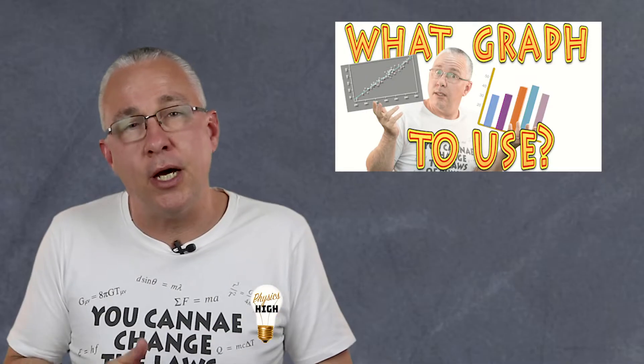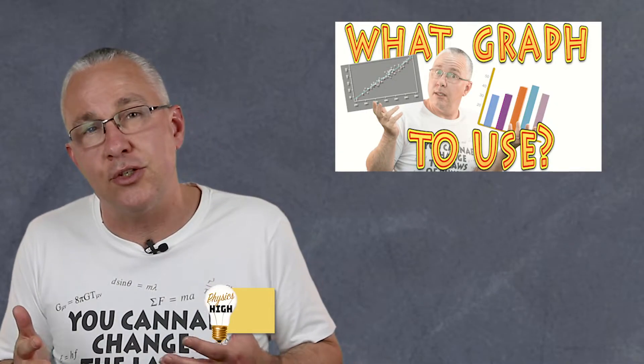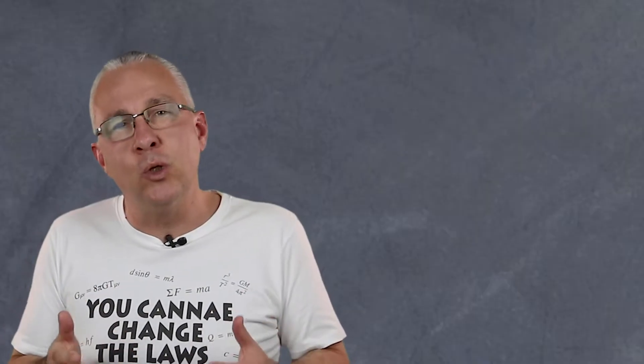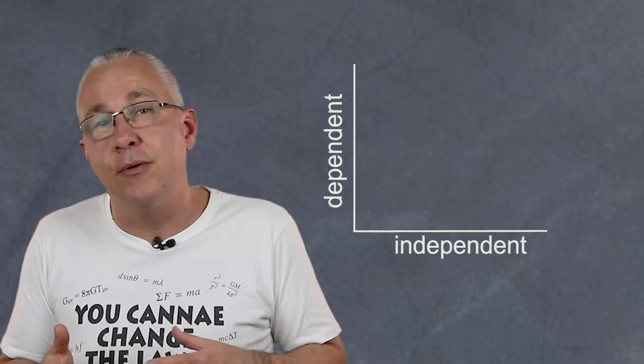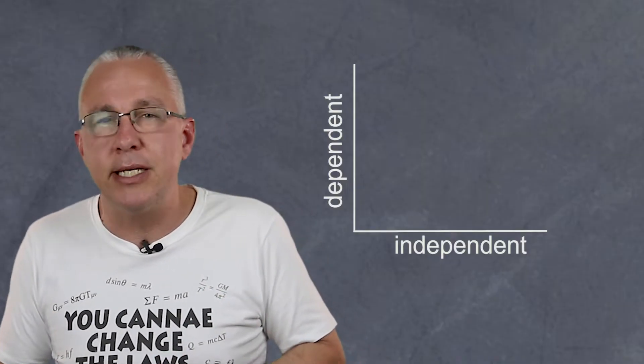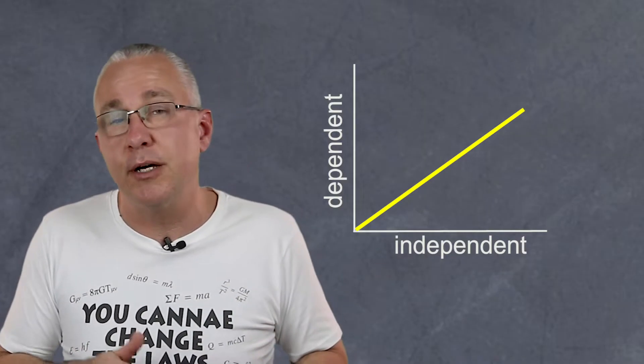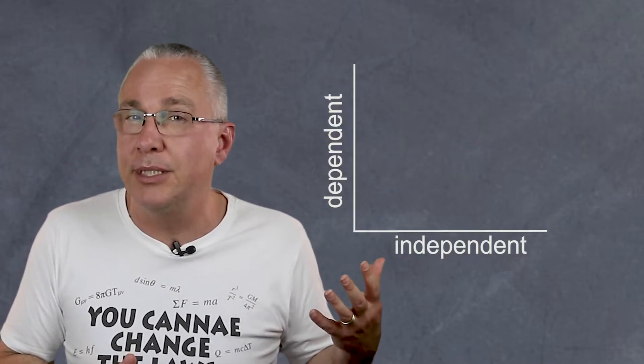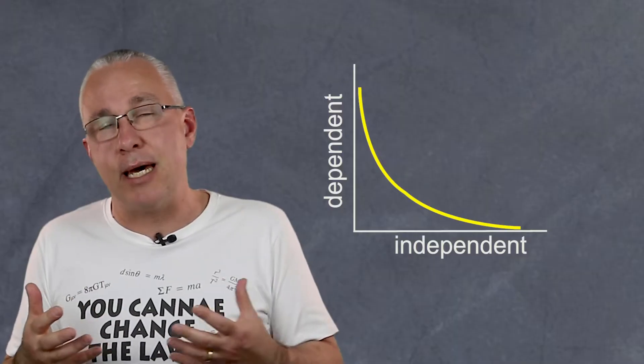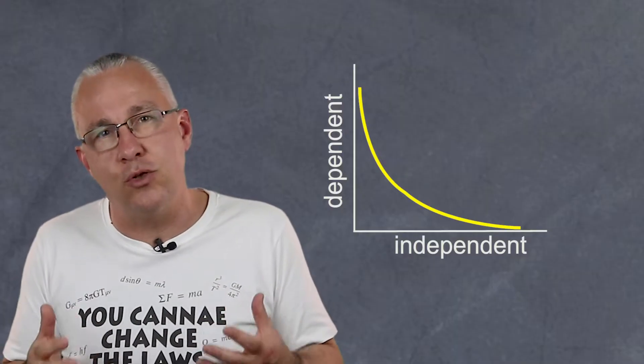If you watched my previous video, I explained how you can draw the appropriate graphs for the type of data that you have. But generally when we look at the graphs that we have, we're looking at trends that we see. For example, you might find that as your independent variable increases, so does your dependent variable. You might find in fact as your independent variable increases, your dependent variable decreases. Well there is actually a mathematical relationship that ties the two together.